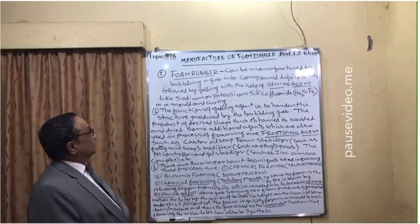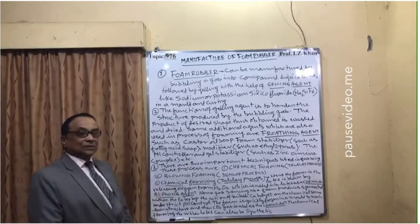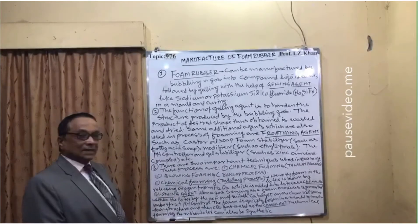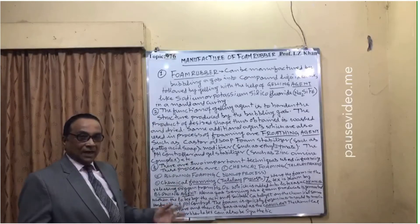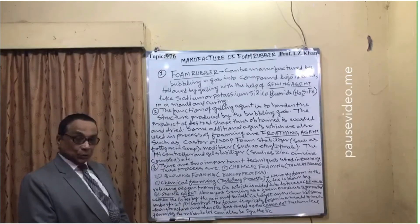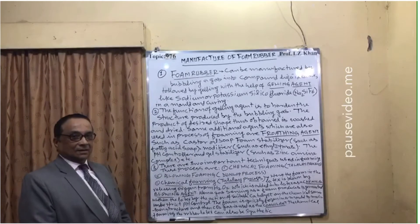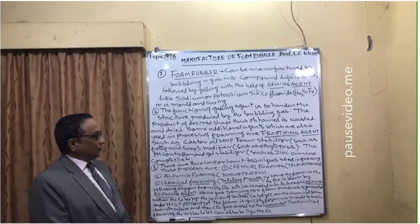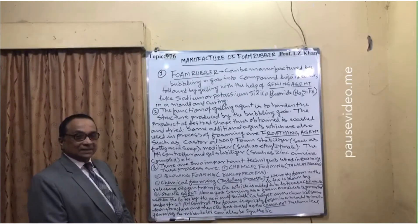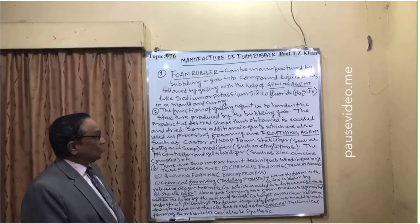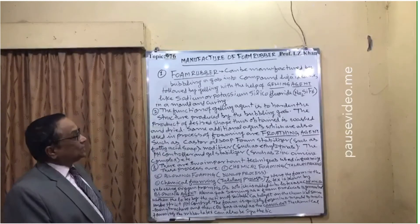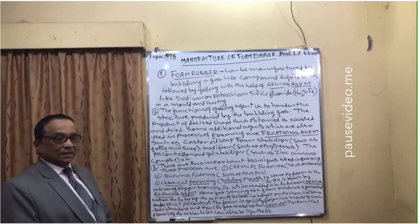Some additional agents are used in the process of forming. The frothing agent, such as castor oil soap, makes the material float and more soft. A foam stabilizer is also used, such as fatty acid soap, which acts as a stabilizing agent. A modifier is also used, such as ethyl zymate, which acts as a modifying agent.